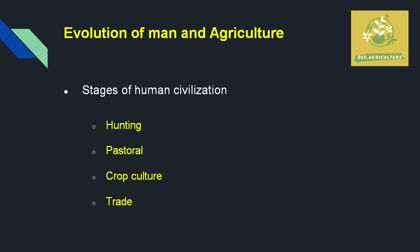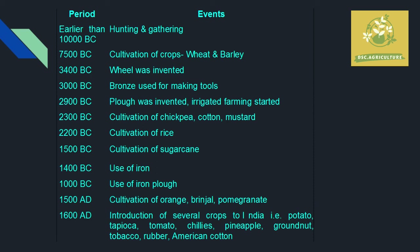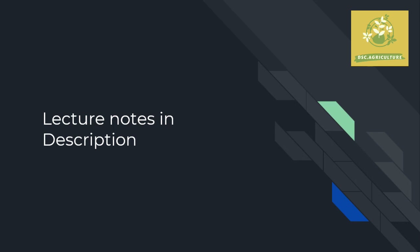After the crop culture stage, humans began trading what they produced from one place to another. To summarize the periods: Hunting and Gathering was earlier than 10,000 BC, followed by the Pastoral Stage, and then the Crop Culture Stage around 7,500 BC. The first crops produced by man were wheat and barley, around 7,500 BC. These are important periods which can be asked in one-mark questions.